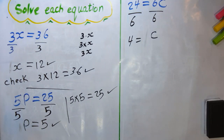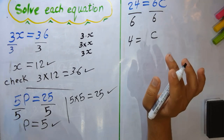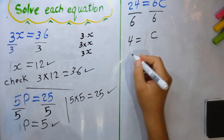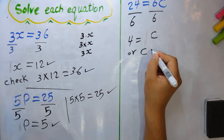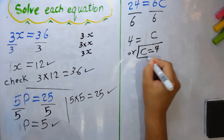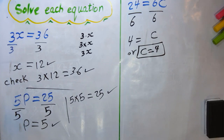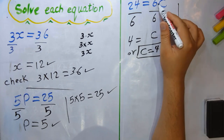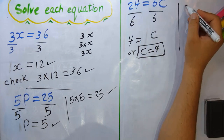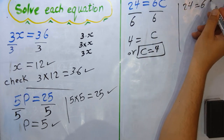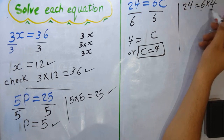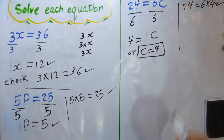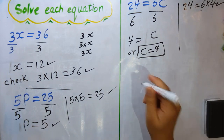The answer is 4 = c, or equivalently c = 4. To check: substitute c = 4 into the equation — 6 × 4 = 24. That is correct, so your answer is correct.